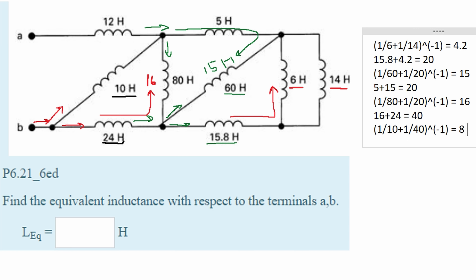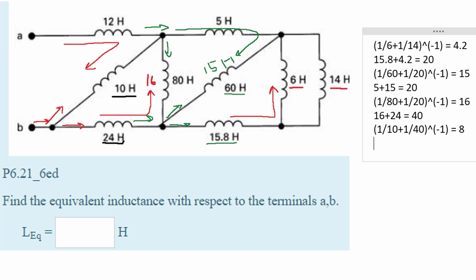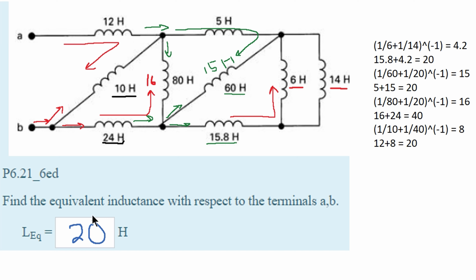Now these inductors are in series with each other — if we run some current through here we can see that. So we're basically going to have 12 plus 8 which is equal to 20. That means the equivalent inductance with respect to terminals A and B is 20 Henry. That is the answer for this problem.